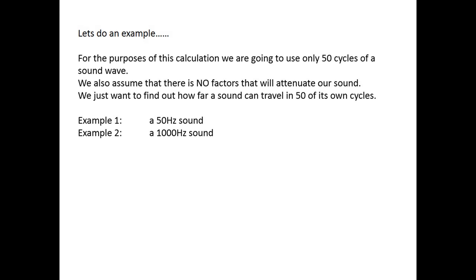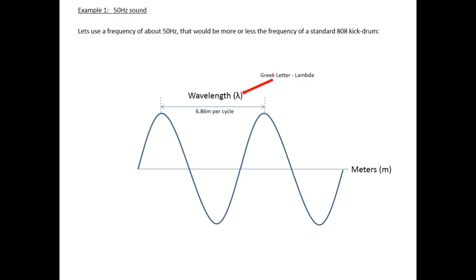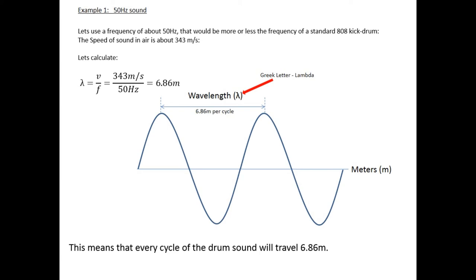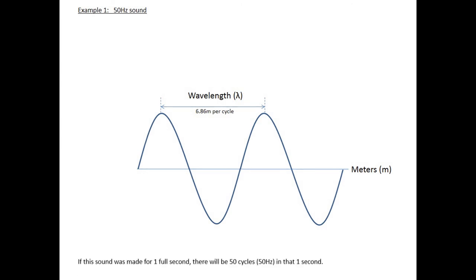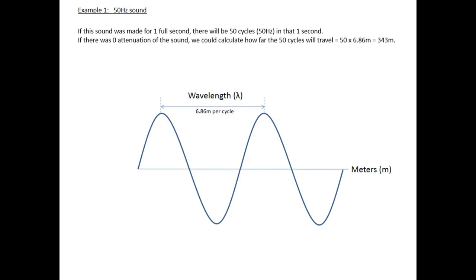We will do two examples. Number one will be a 50 hertz sound, and number two, a 1000 hertz sound. If we look at the 50 hertz sound, that would be roughly the same as a standard 808 kick drum. And if we do a calculation, we know that the speed of sound in air is roughly about 343 meters per second. If we calculate our distance of the wavelength using the formula, we will get roughly 6.86 meters for every cycle that it will travel. And if I multiply it by 50, I will get 343 meters.